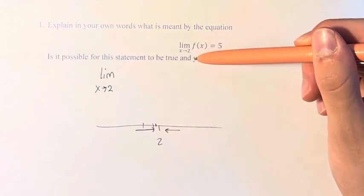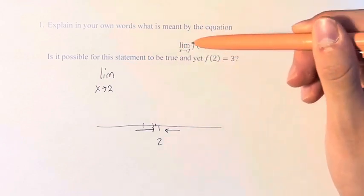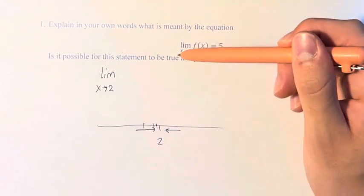Is it possible for this statement to be true and yet f(2) equals 3? Yes, this limit doesn't actually say anything about the value of f at 2.